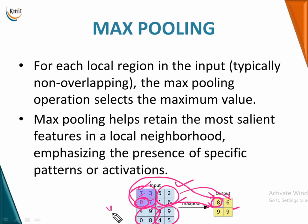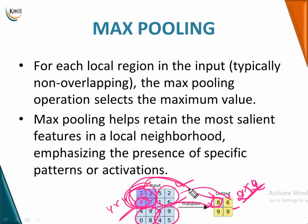An entire 4x4 input of 16 pixels is replaced by a 2x2 output. The type of pooling depends on what value you use to replace the pixels — if you choose the maximum of all pixels in the pool, it is called max pooling. Max pooling helps retain the most important features in the local neighborhood and emphasizes the presence of specific patterns or activations.